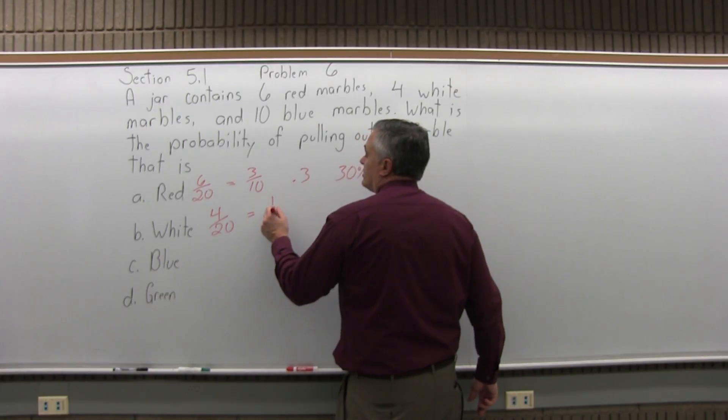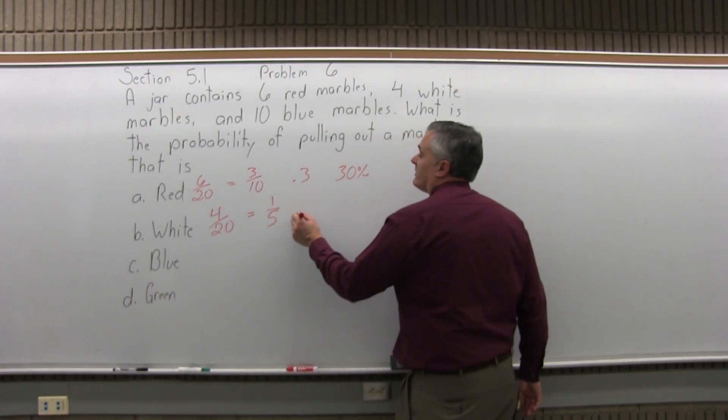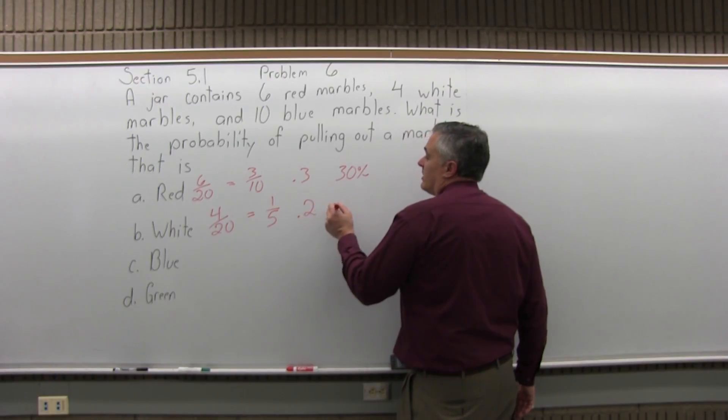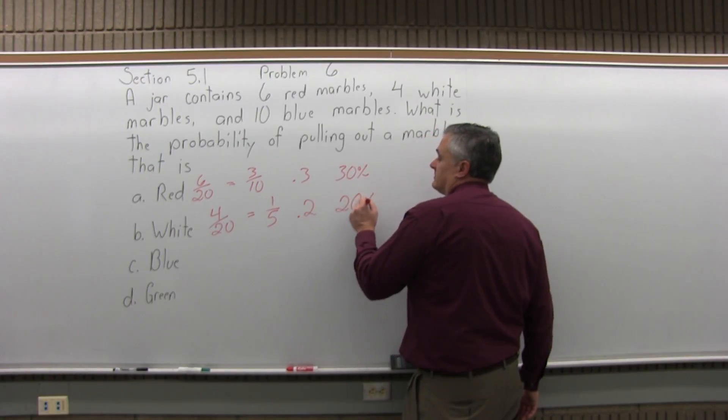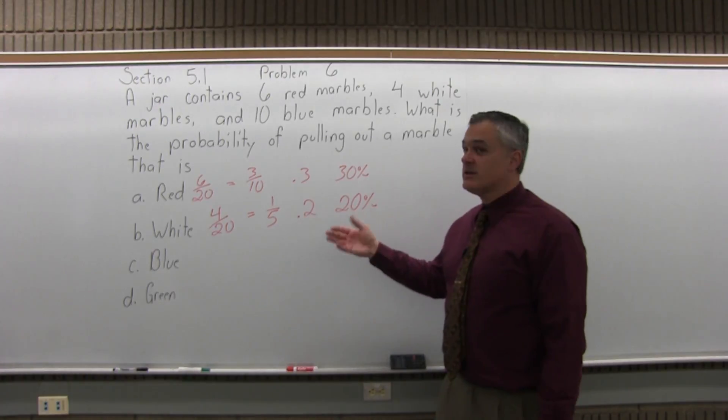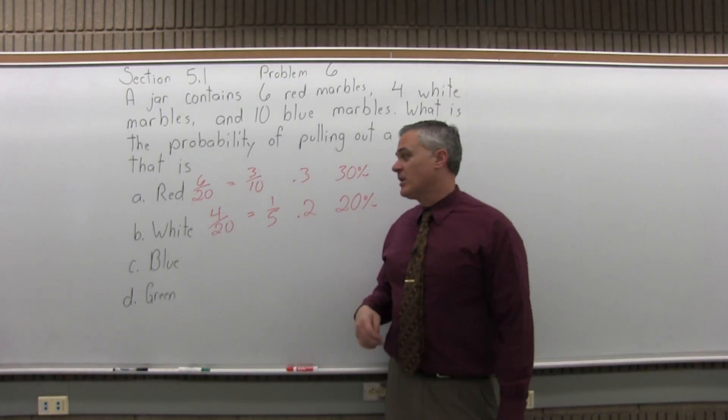If you like, you can reduce it to 1 fifth. 1 fifth can be written as 0.2 or 20 percent. All I'm saying is there's a 20 percent probability that the marble you reach in and grab will be a white marble.